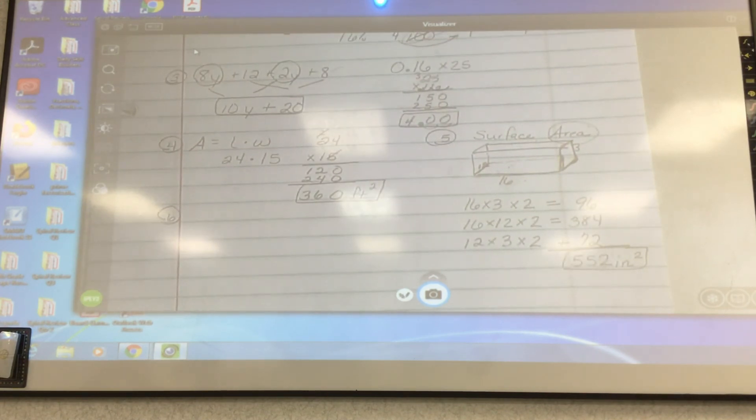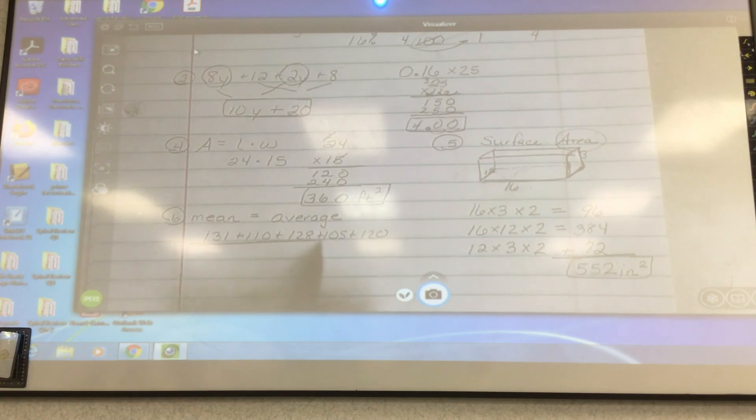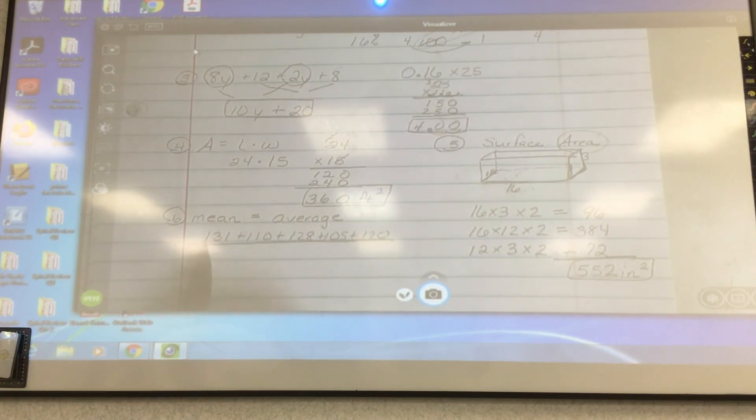Number 6. George bowled five games. He scored 131, 110, 128, 105, and 120. What is the mean? How do I find the mean? What's another word for mean? Anybody? Average. How do we find it? What do we do first? Add 131 plus 110 plus 128 plus 105 plus 120 and then we're going to divide it by 1, 2, 3, 4, 5 because there are five numbers.